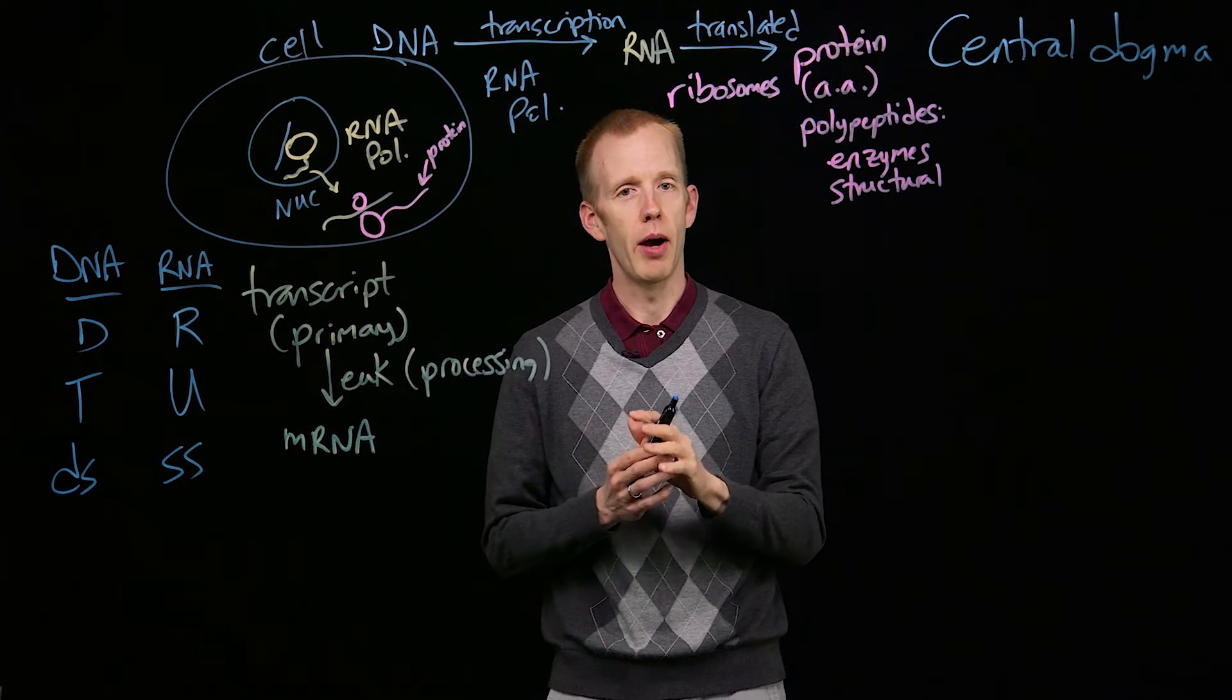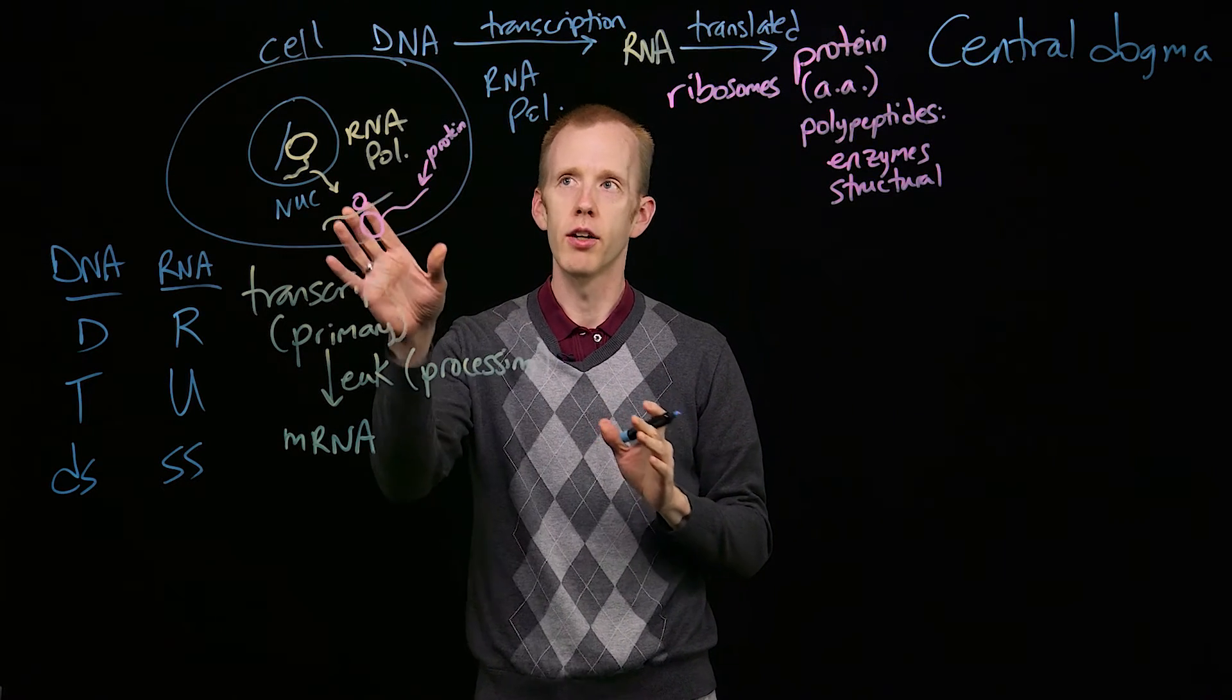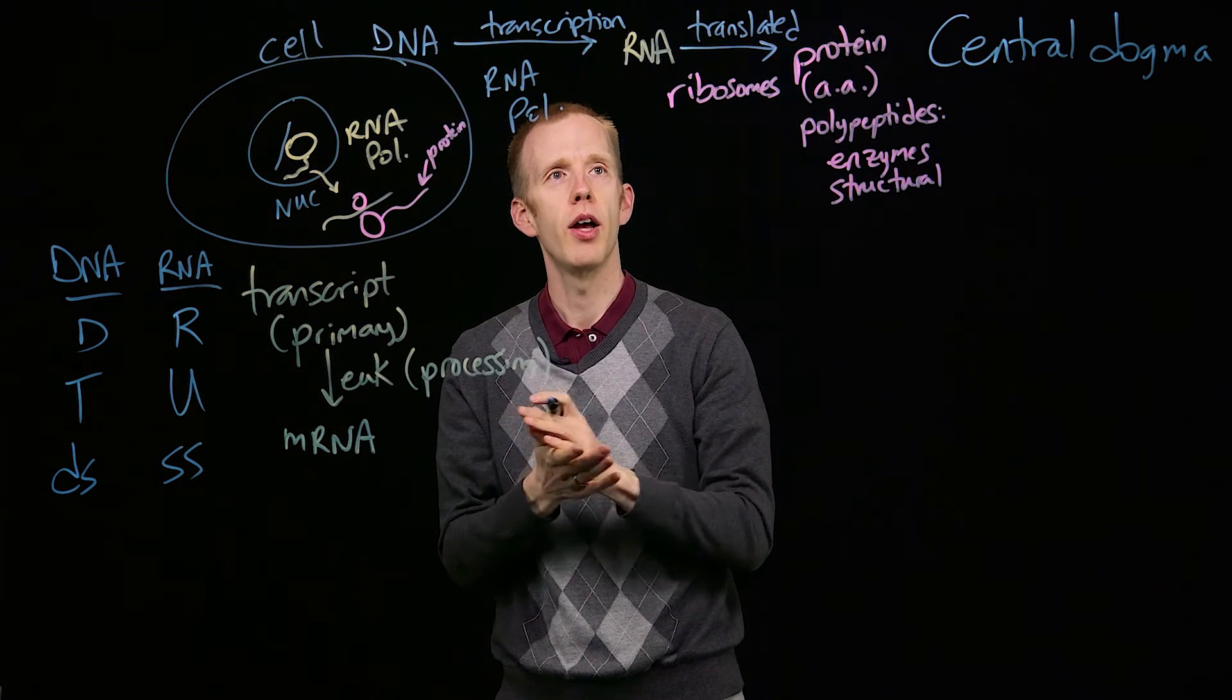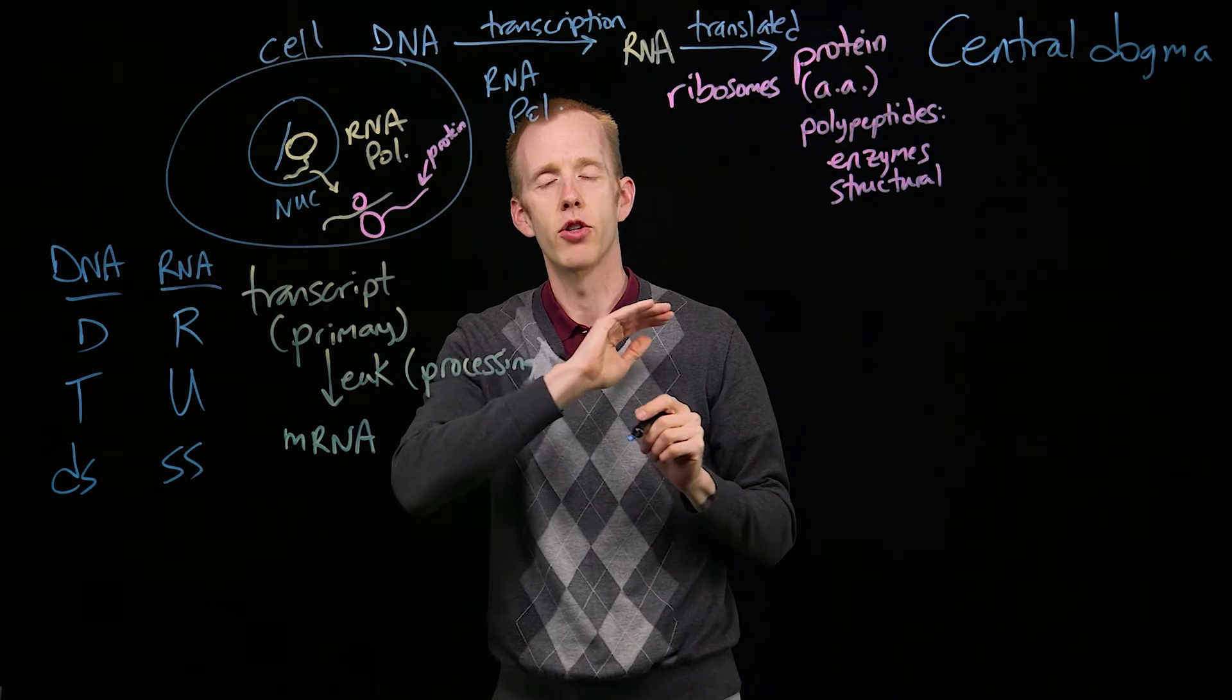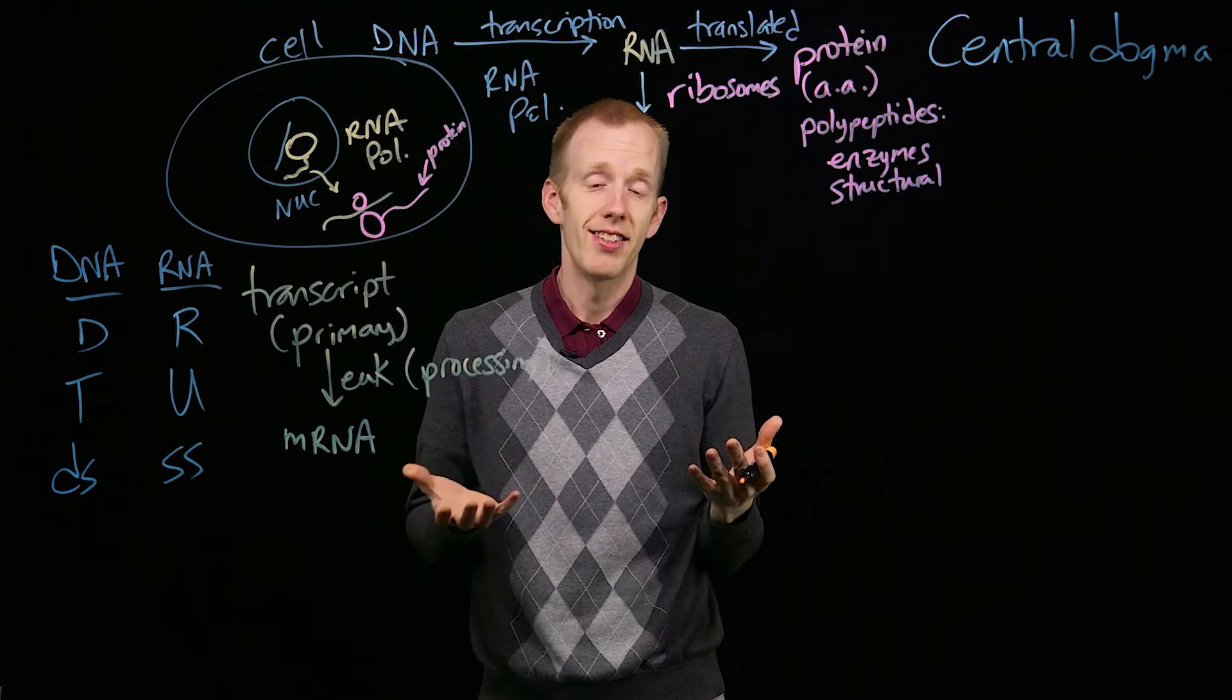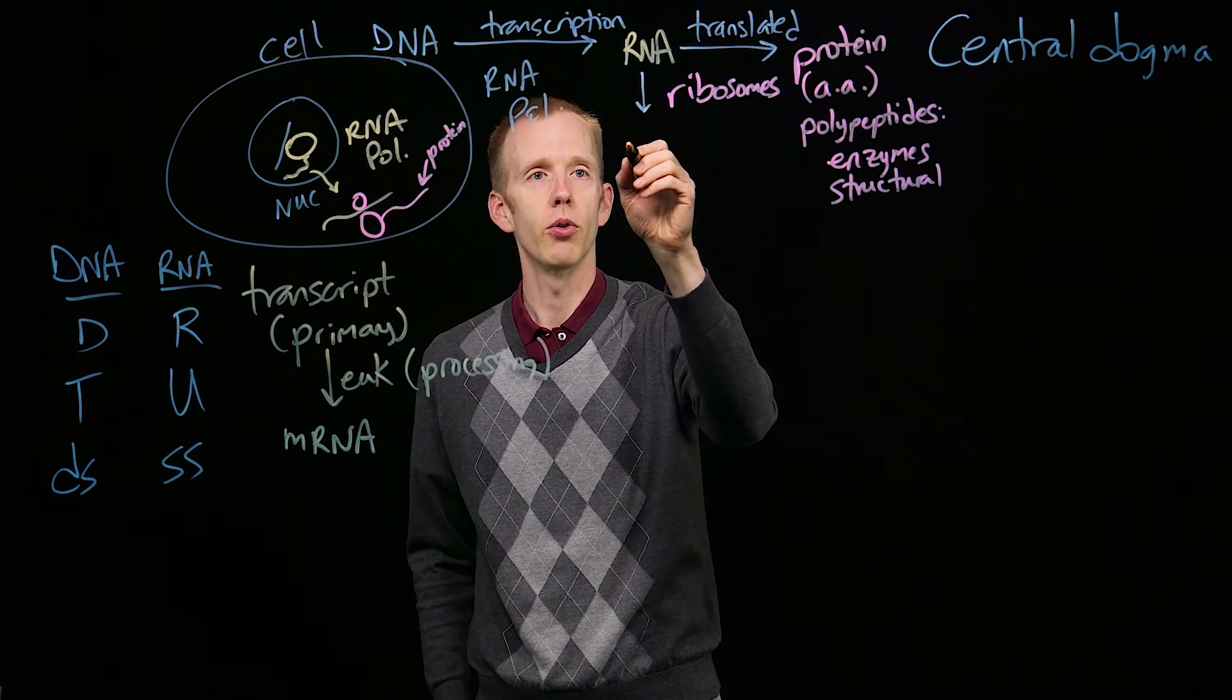A couple caveats about that. There used to be an idea that one gene, one part of a DNA molecule, would produce one protein. That's not always true. Sometimes, for some genes, the process stops here, at transcription. There are some RNA molecules. That RNA is the job of the gene. There's no translation. The protein is not produced from that RNA molecule.